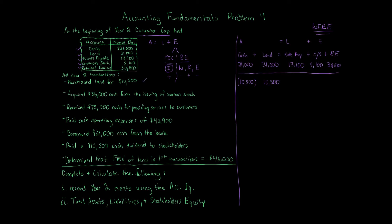Transaction 2: Acquired $36,000 cash from the issuing of Common Stock. Cash goes up by $36,000. No effect to Land or Notes Payable. Common Stock goes up by $36,000. Notice the accounting equation balances — what happens on one side goes to the other.